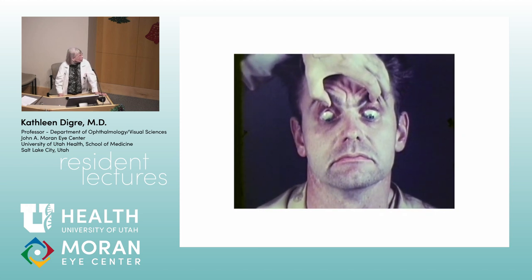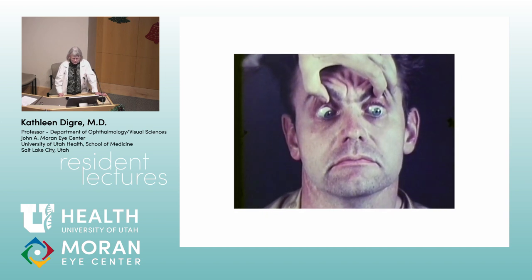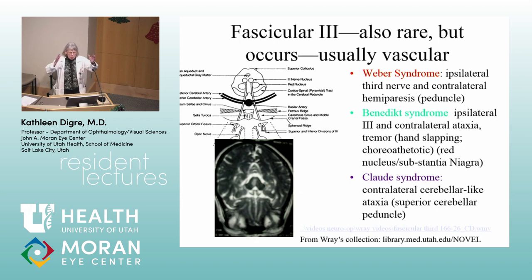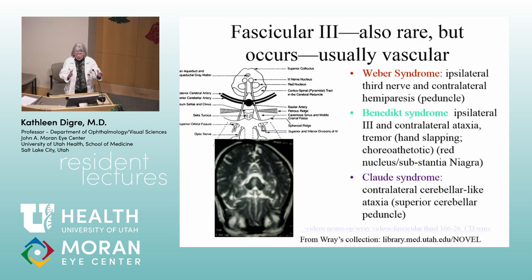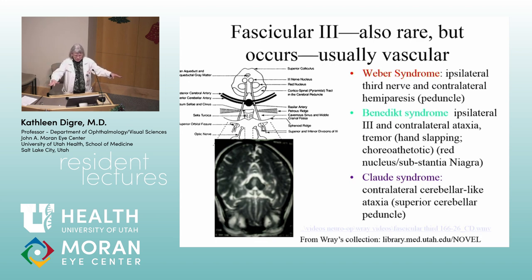Because the third nerve in the midbrain goes right by the red nucleus and cerebral peduncles, you can get different syndromes — fascicular third nerve syndromes. This frequently involves weakness, tremor, or ataxia, usually on the opposite side. You'd see the third nerve palsy on one side and weakness, tremor, or ataxia on the other. I have seen this diagnosis in triage clinic at least three times, twice within the last five years. So this is not completely rare. Let's look at one of these syndromes.